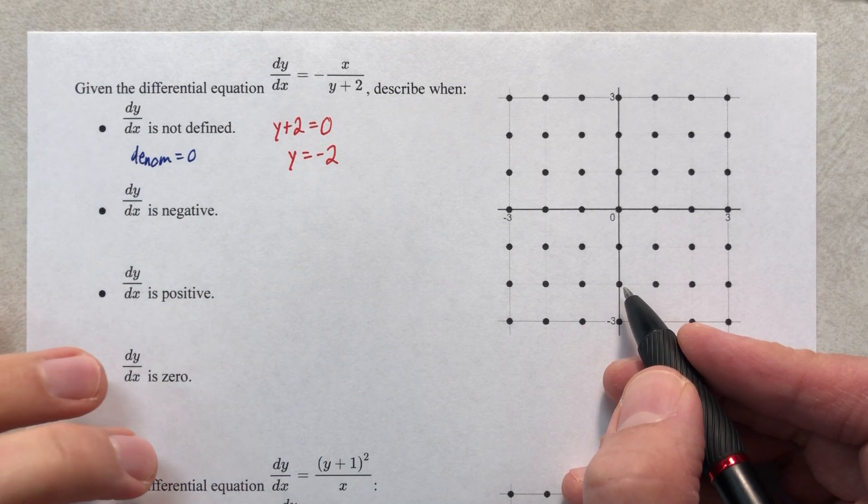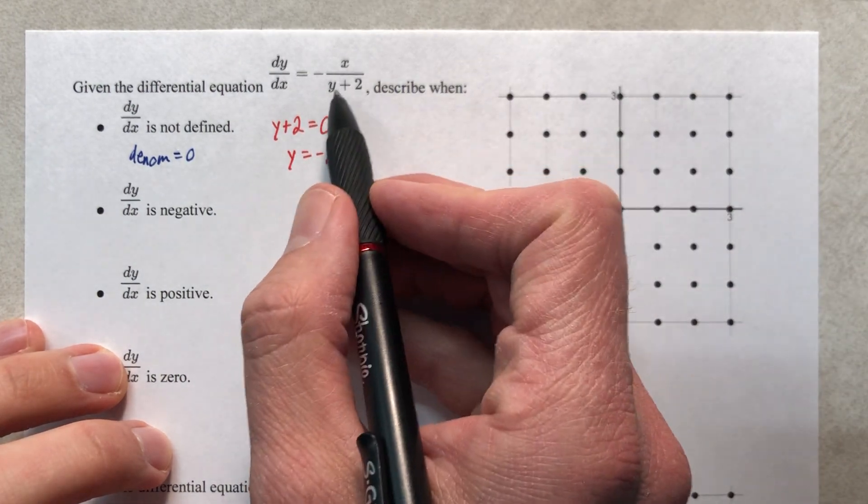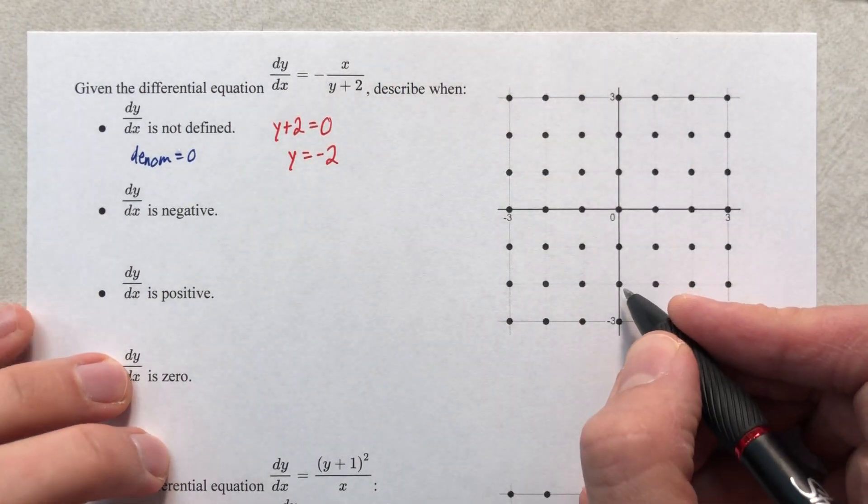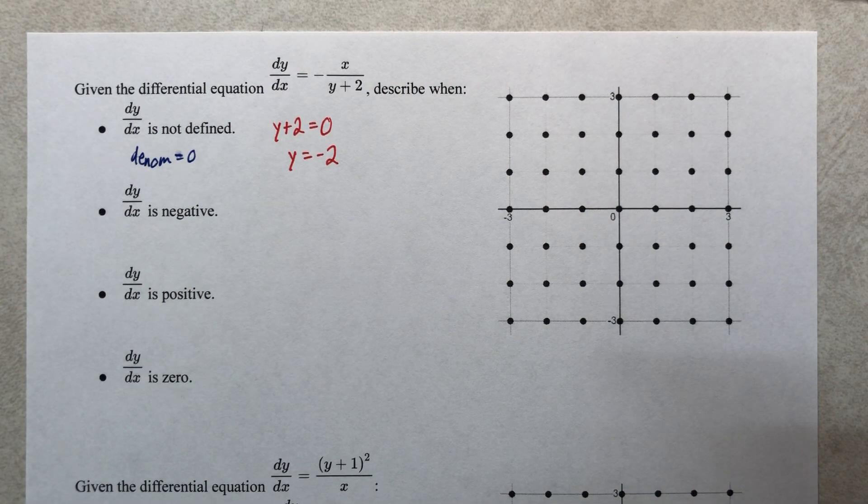But basically, if we graphed the slope at zero negative two, we'd have zero over zero, so we couldn't graph the slope there. That's, again, beyond not defined. That's indeterminate.